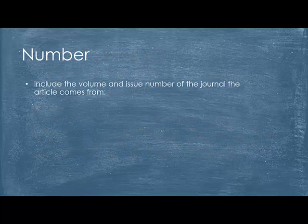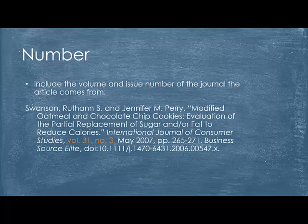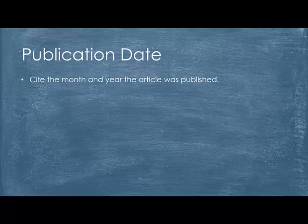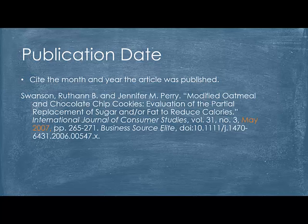Next is the number. Include the volume and issue number of the journal the article comes from. In this case, it's volume 31, number 3. After that, you have the publication date. Cite the month and year the article was published. In this case, the article was published May 2007.